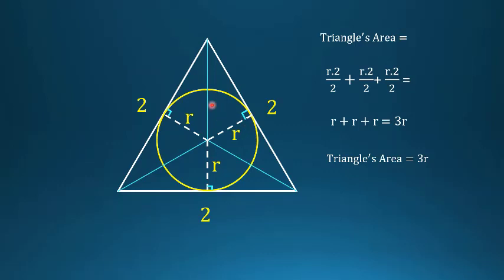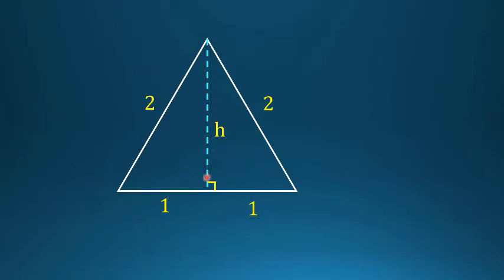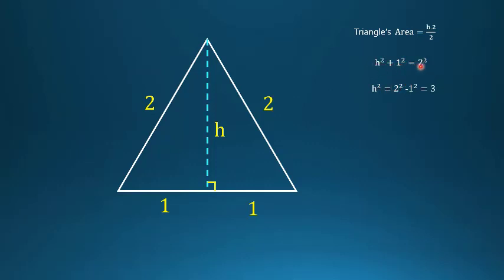Now we find the triangle's area another way so we can solve for r. Draw the equilateral triangle with sides 2 and its height h. Because it is equilateral, the height bisects the base into 1 and 1, and the height is also the median. By the Pythagorean theorem: h² + 1² = 2², so h² = 4 − 1 = 3, meaning h = √3. Therefore the triangle's area = h × 2 / 2 = √3 × 2 / 2 = √3.